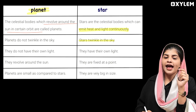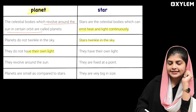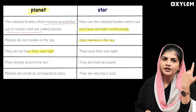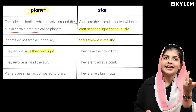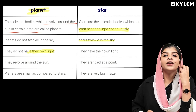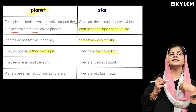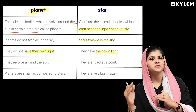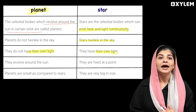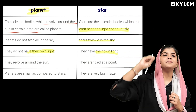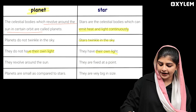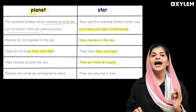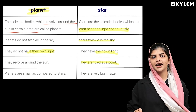Planets do not have their own light, whereas stars emit light — they have their own light. Planets revolve around the sun, but stars are fixed at a point. That is very important. Also, planets are small as compared to stars, but stars are very big in size.